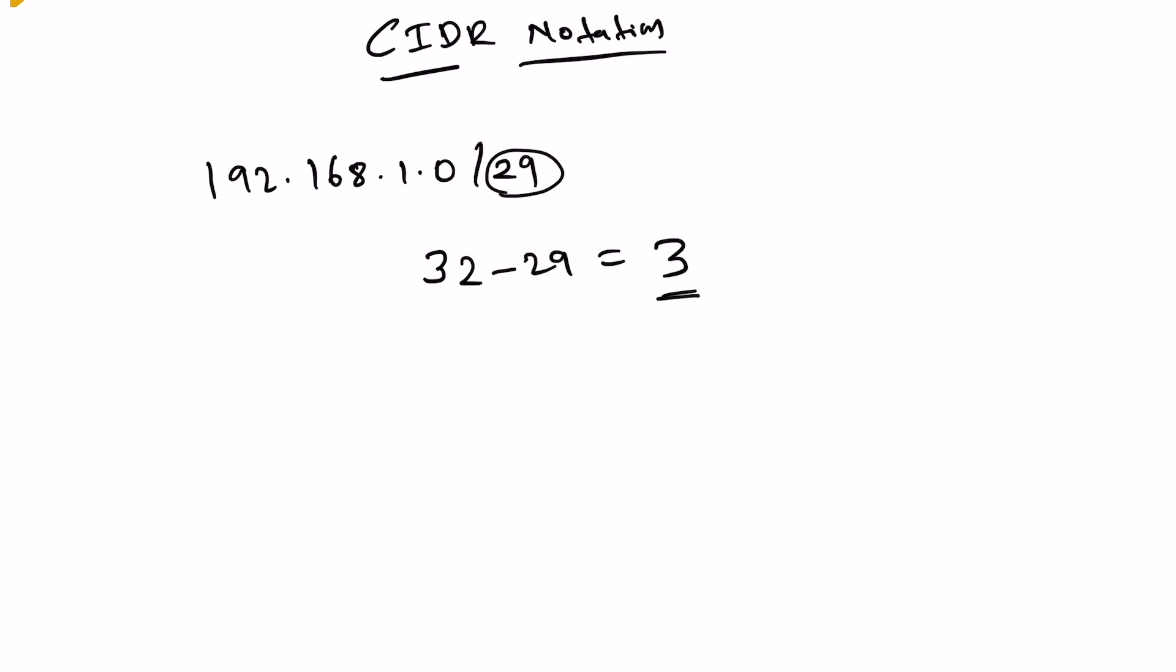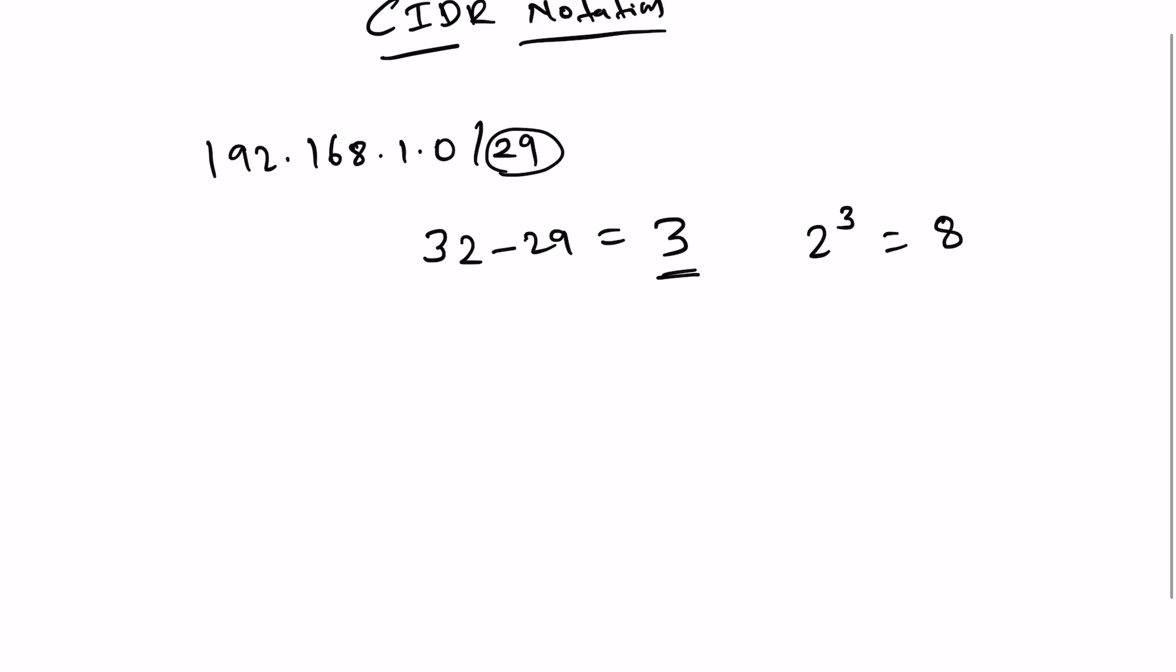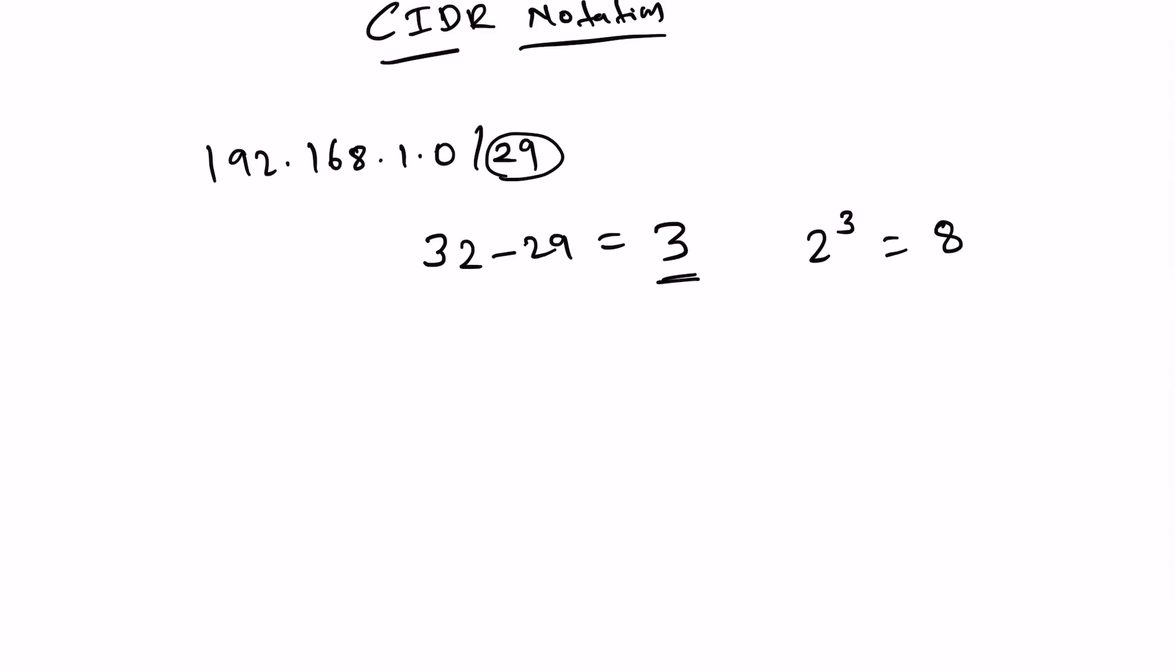Once you get this value, do 2 power 3, which equals 8. If it's a local network (not cloud), you're gonna get 8 minus 2, that's 6 IPs. The two IPs that are subtracted: the last IP goes to broadcast ID and the first one is the network ID.